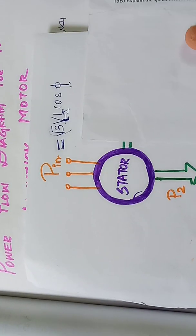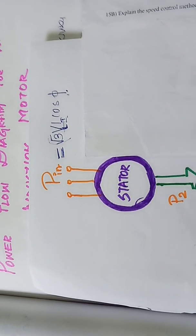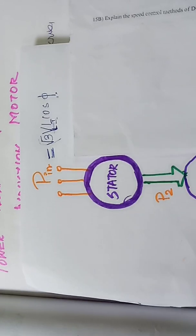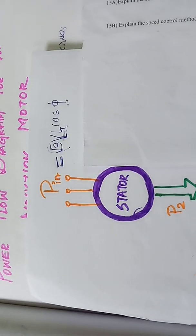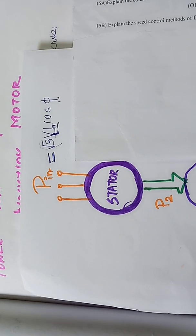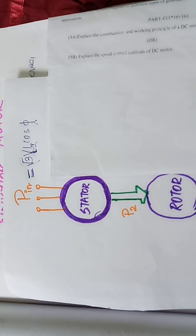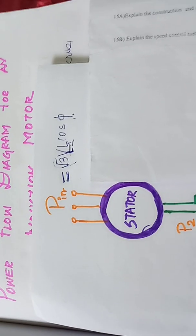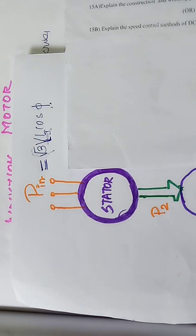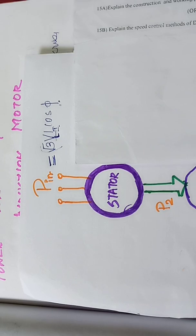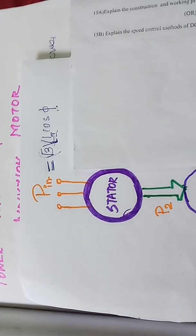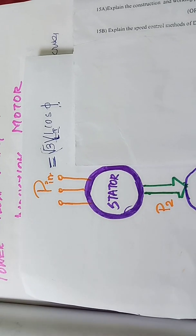The motor is starting. The stator is the stationary part of the motor. The input power goes from the stator to the rotor. In between there are losses, because the stator is made of material, so losses are produced.